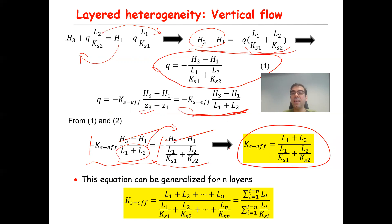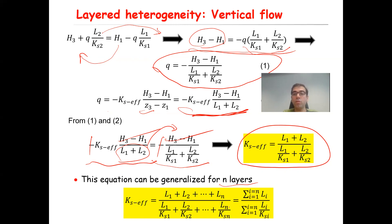You can follow the same procedure for more than two layers — three, four, five, or more. Generalizing for N layers: Ks_eff = (L1 + L2 + … + LN) / (L1/Ks1 + L2/Ks2 + … + LN/KsN), or in summation notation: Ks_eff = Σ(Li) / Σ(Li/Ksi) for i from 1 to N. This is the formula for effective saturated hydraulic conductivity of a porous medium with N layers under vertical flow perpendicular to the layering.